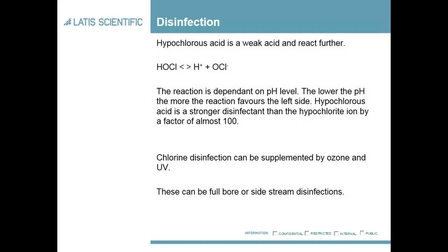The hypochlorous acid is a weak acid and it can react further, forming hypochlorous acid and the hypochlorite ion. It is a much stronger disinfectant than the hypochlorite ion — by around 100 times, although that can vary depending on which literature you read. This is why pH is very important to the disinfection of the pool — it is how you maximise the amount of disinfection.